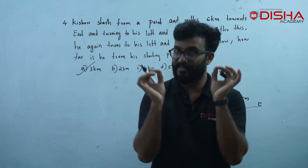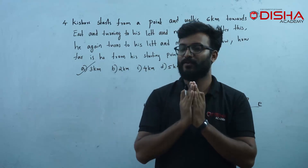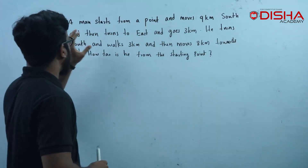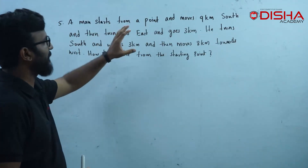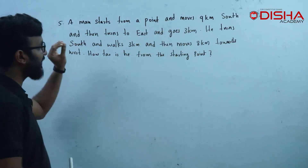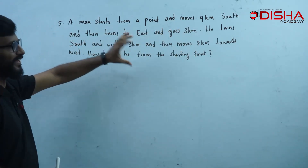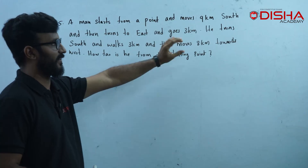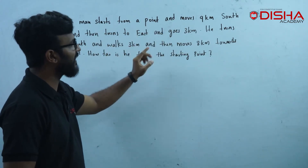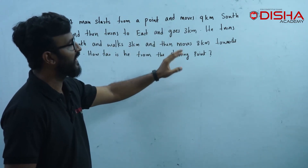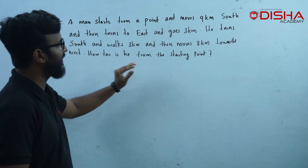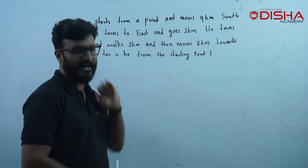Kishore starts from a point and moves 9 km south, then turns to east and goes 3 km. He turns south and walks 3 km, and then moves 8 km towards west. How far is he from his starting point?